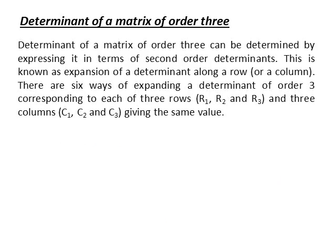Let's discuss the determinant of a matrix of order 3. The determinant of a matrix of order 3 can be determined by expressing it in terms of second-order determinants. This is known as expansion of a determinant along a row or a column. There are 6 ways of expanding a determinant of order 3, corresponding to each of the 3 rows and 3 columns. In all 6 cases, the value of the determinant remains the same.